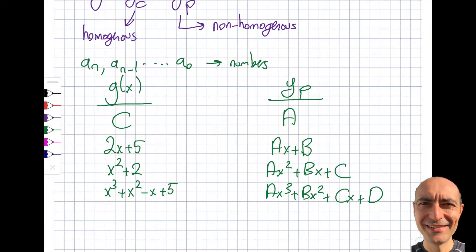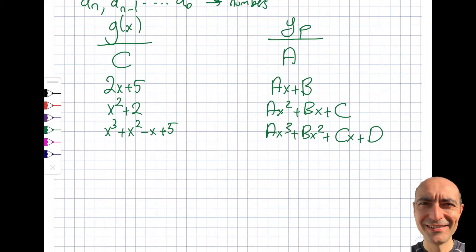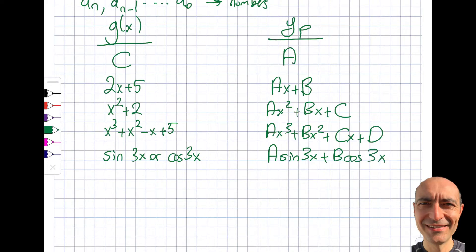The goal is to find the values of A, B, C, D — I'll illustrate that approach shortly. Continuing the table: if G of X is sine 3X or cosine 3X, then I try A·sin(3x) + B·cos(3x). Note that even if G of X contains only sine, you still need to include the cosine term. It may turn out B equals zero, but you still need to try it, because many times both A and B will be non-zero.